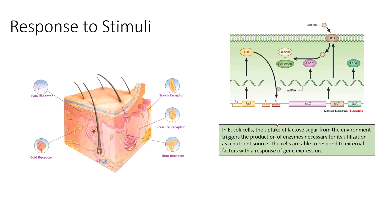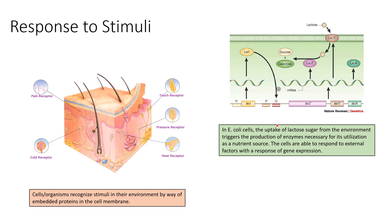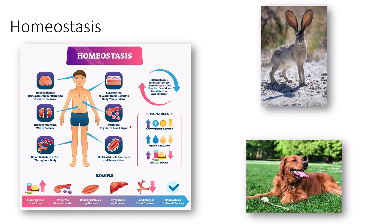Once lactose is identified in its environment, it triggers a response to environmental stimuli, producing the enzymes necessary to break down the lactose. Cells and organisms recognize stimuli in their environment by way of embedded proteins in the cell membrane. Looking at a cross section of human skin, there are hairs embedded in the lower layers of the epidermis, along with a variety of receptors: pain receptors, cold receptors (thermoreceptors), touch receptors (mechanoreceptors), heat receptors, and pressure receptors — all of which help take external stimuli and produce an internal response.